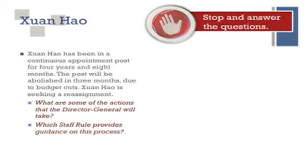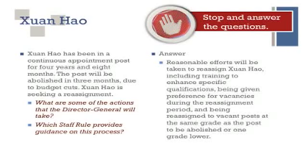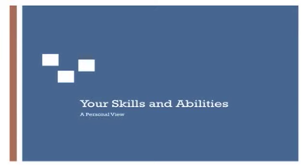The answer to this situation would involve reasonable efforts being taken to reassign Wan Ho. Some of these efforts could include training to enhance specific qualifications. The reference we would use here is Staff Rule 1050.2. So how well did you do? Were you able to identify the appropriate answers and the rules that were most appropriate in each one of those situations?